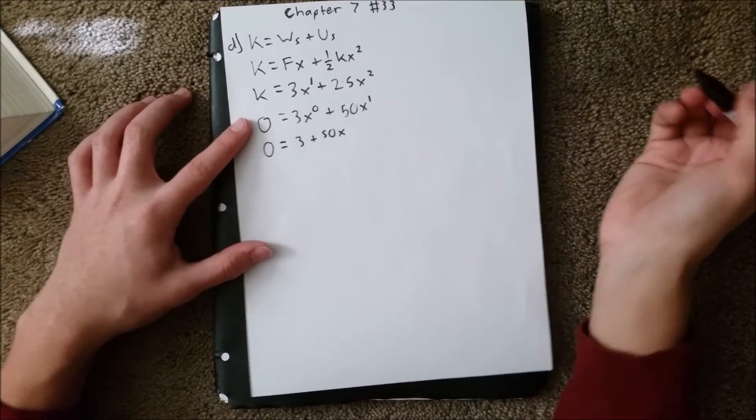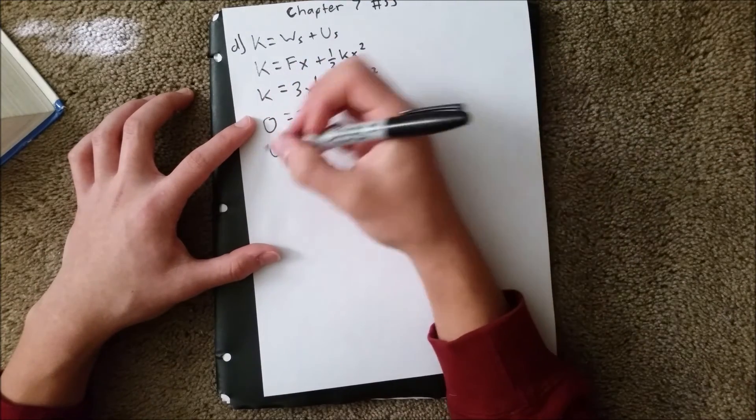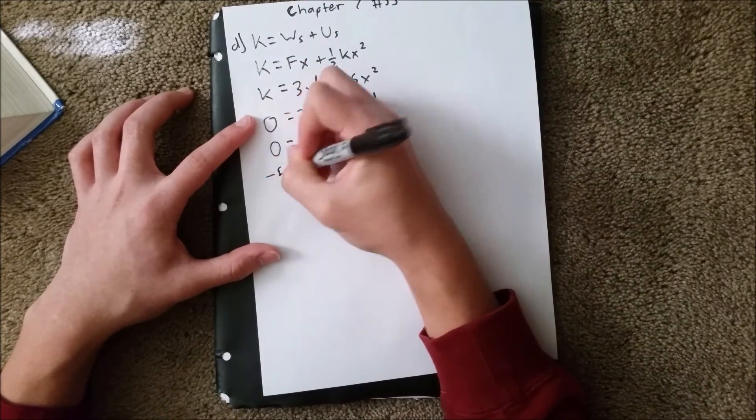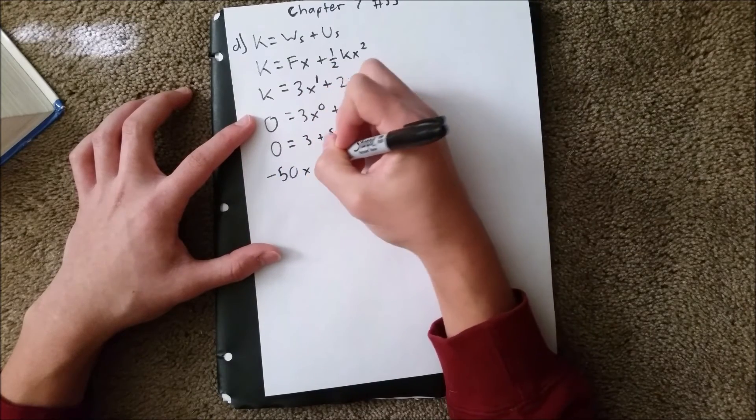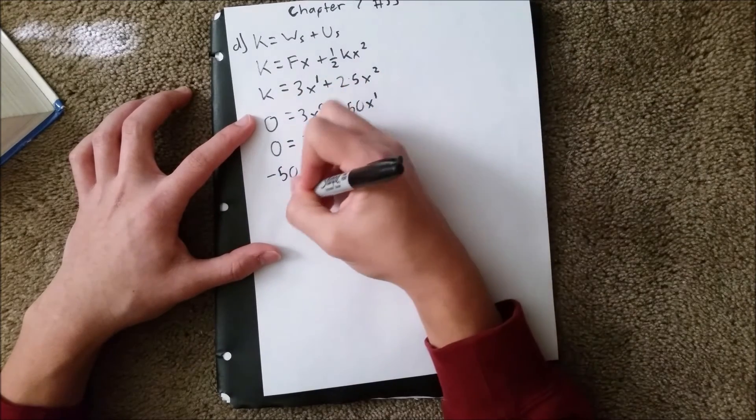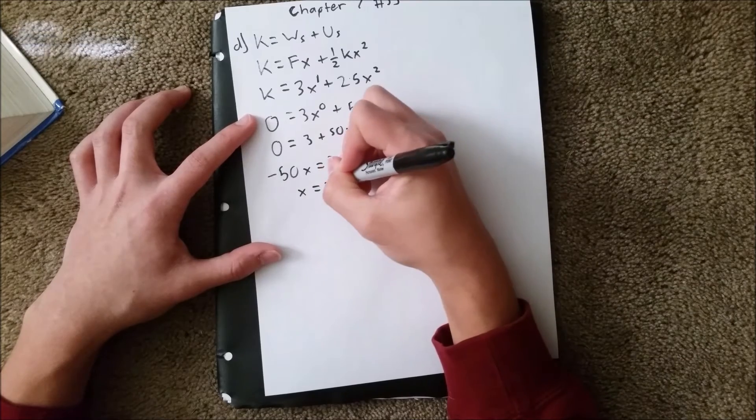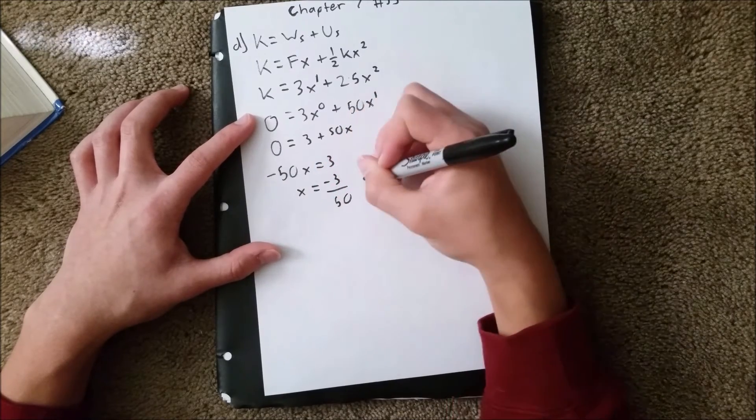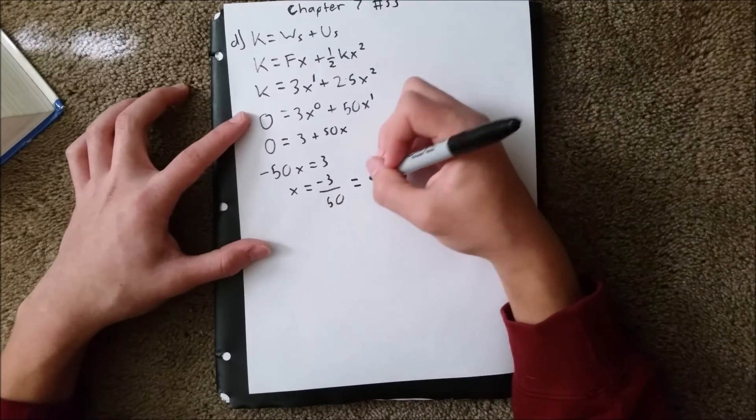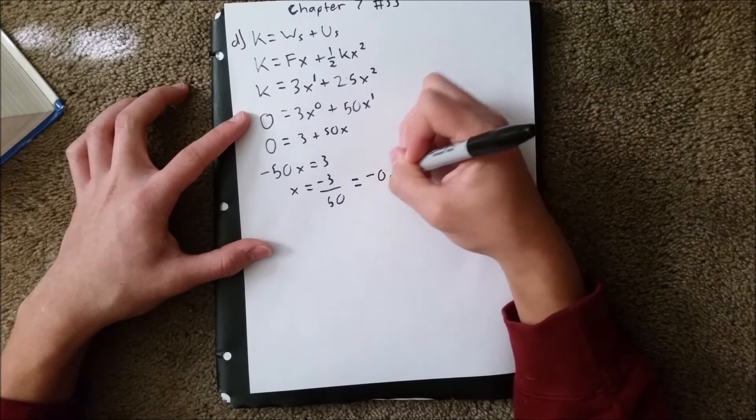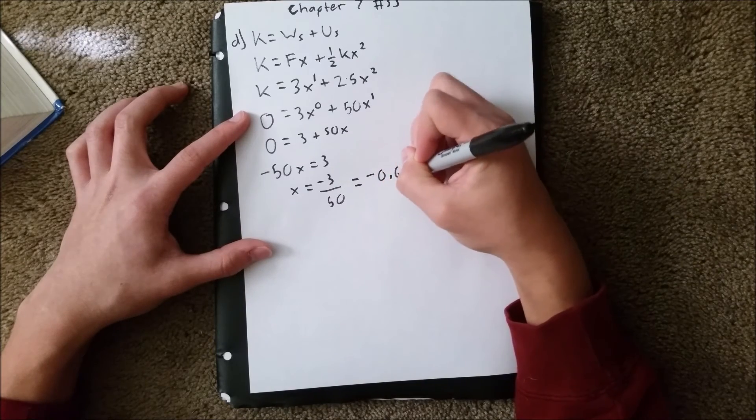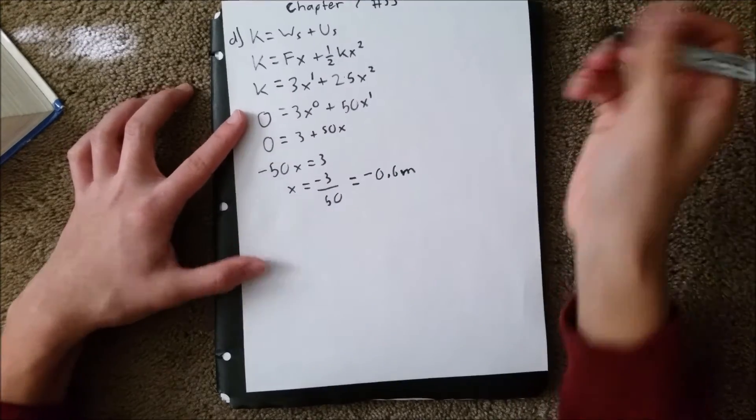Now all we need to do is solve for x. Subtract 50 on both sides, we get negative 50x equals 3. So x equals negative 3 over 50, which, when you plug it into your calculator, gives you negative 0.06 meters.